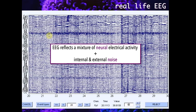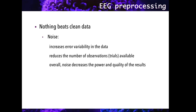So before we can start analyzing our data, either with univariate or multivariate analyses, we need to first clean the signal. EEG preprocessing is related to this cleaning of the signal, but acquiring the cleanest data to begin with is at least as important as doing a good job cleaning the data. Noise increases error variability in the data, which reduces statistical power. Noise also leads to the rejection of bad trials, which increases the number of observations needed, and having a large number of observations is essential for later analysis. Overall, noise decreases statistical power and the quality of the results.